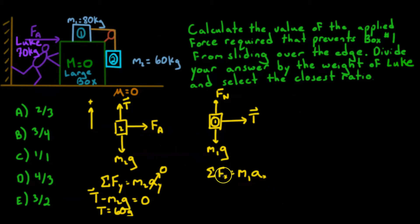So to do that, we have the only horizontal force is that of tension, because there's no friction in this problem. So tension is going to equal m1, which is 80, times acceleration.